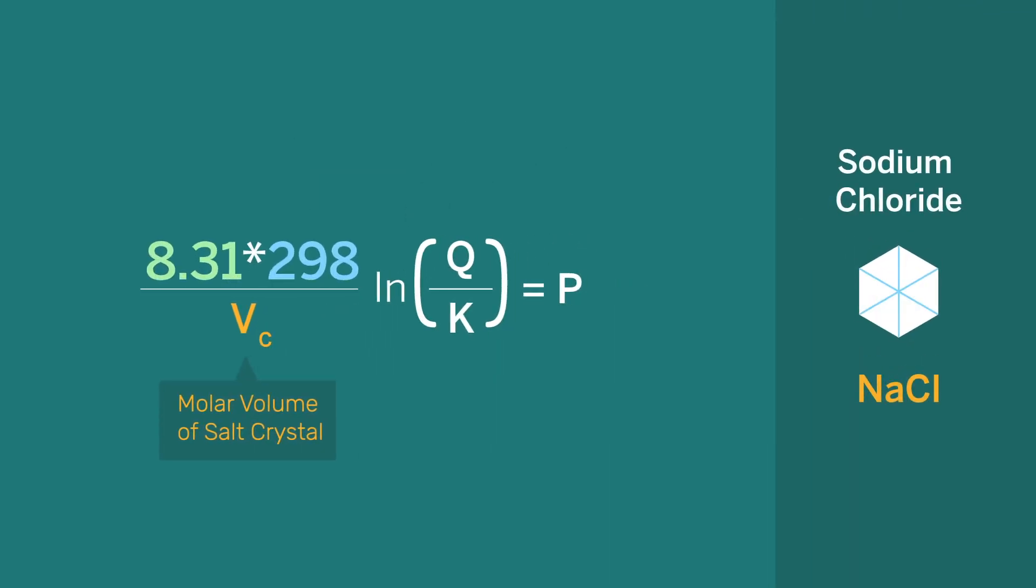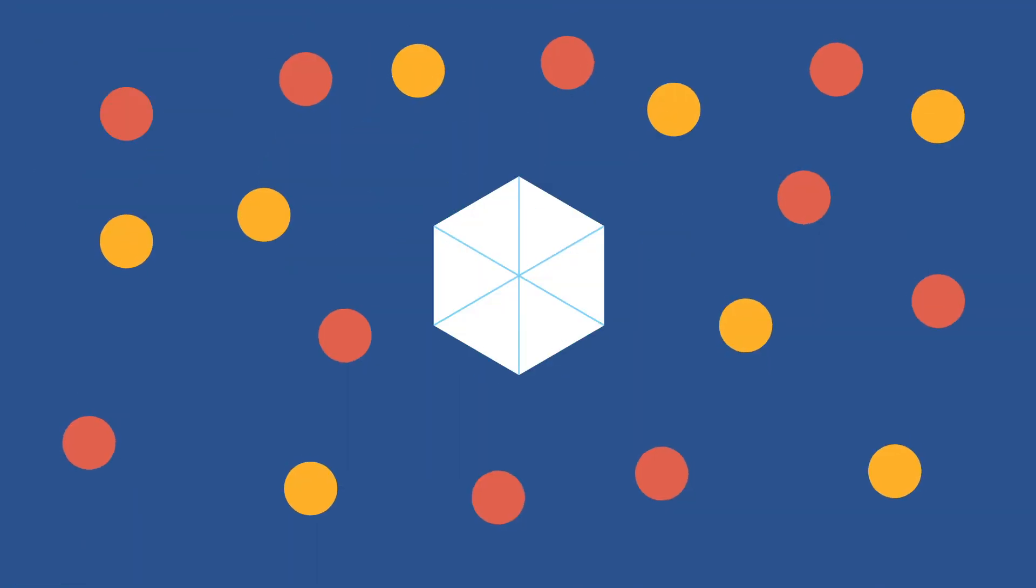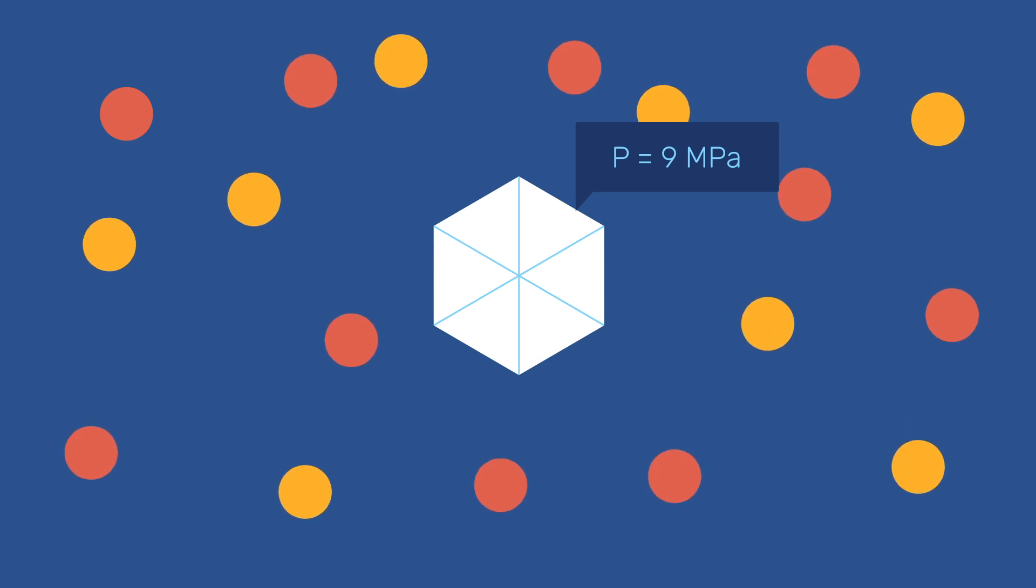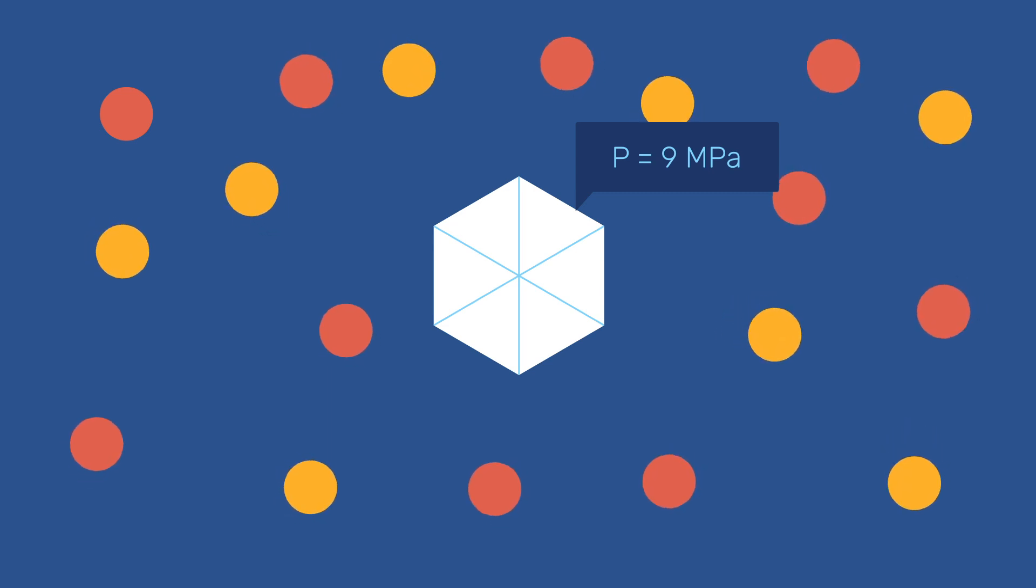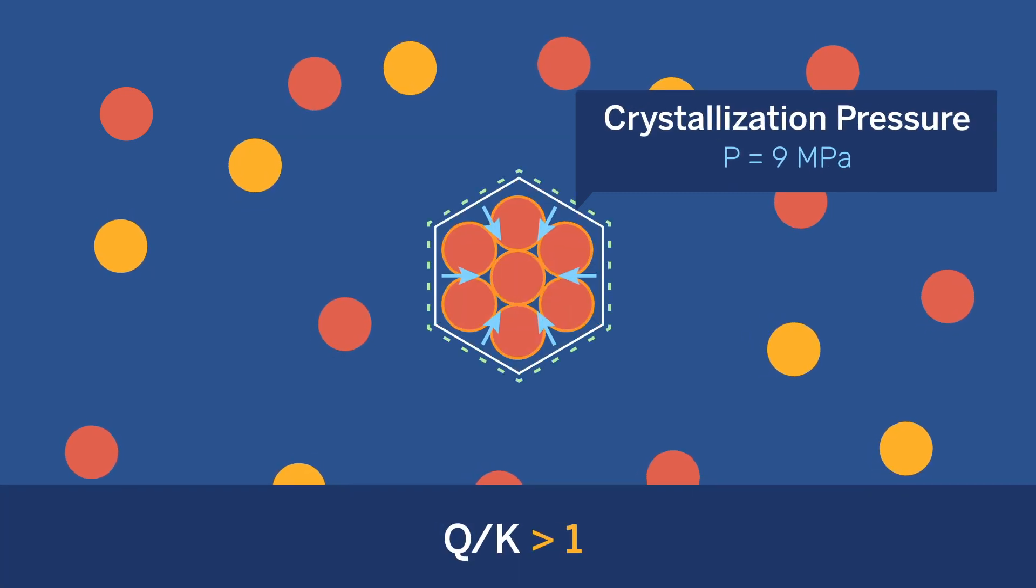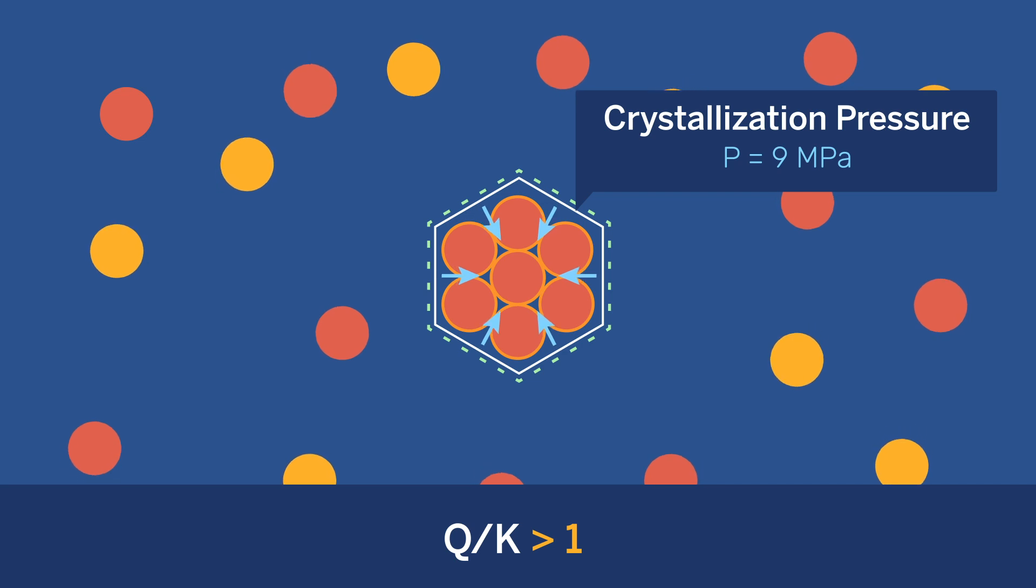As an example, for sodium chloride, with a molar volume of 27 cm³ per mole, a supersaturation of 10%, giving Q over K to be 1.1, would lead to a pressure of 9 MPa at 25 degrees Celsius. That is, a pressure of 9 MPa would have to be imposed on a sodium chloride crystal to prevent it from growing in a solution with a supersaturation of 1.1. Crystallization pressure essentially corresponds to that pressure.